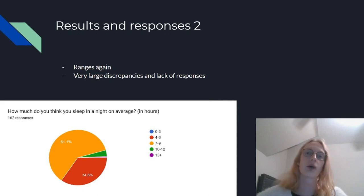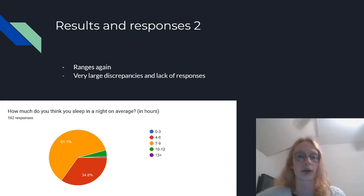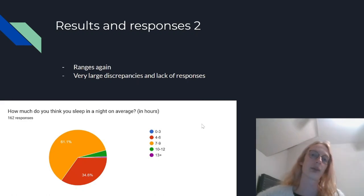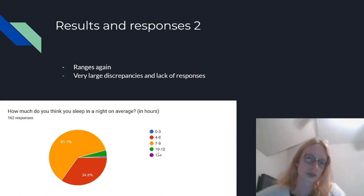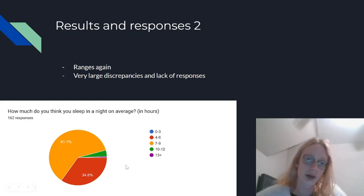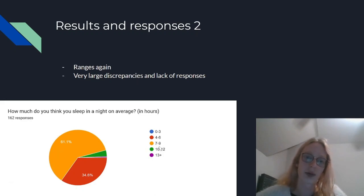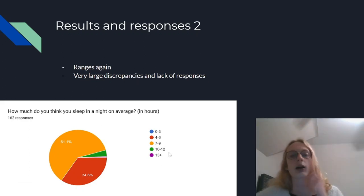This is the second portion of my results and responses. I used ranges for the amount people slept per night, and had very large discrepancies in my data, with a large lack of responses for the higher numbers. Nobody slept 0 to 3 hours in a night. 34.6% of people slept 4 to 6 hours, and 61.1% slept 7 to 9 hours. A very small portion slept 10 to 12 hours, and only one person slept 13 or more hours.